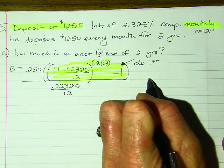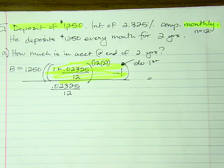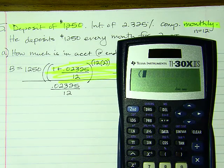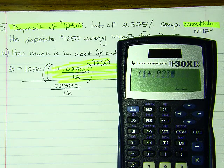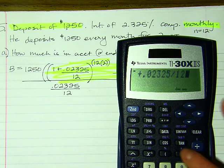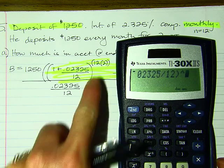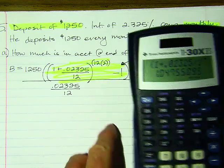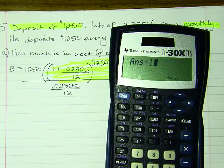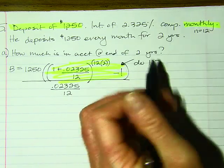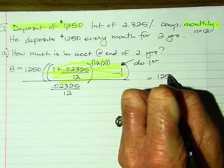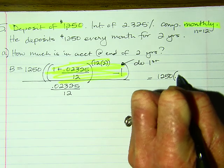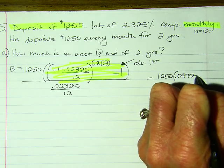Entering into the calculator: (1 + 0.02325/12)^24, then subtract 1. I get approximately 0.04755. So now I have: 12.50 × 0.04755 for the top part.